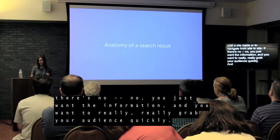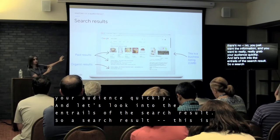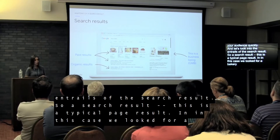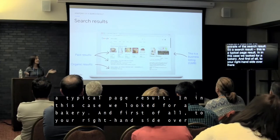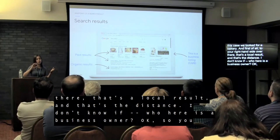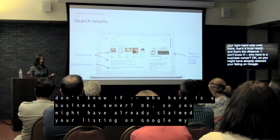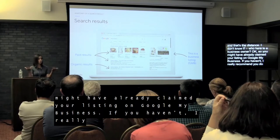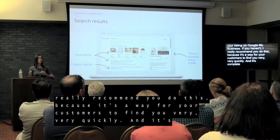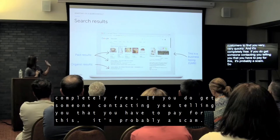Let's look into the anatomy of a search result. Here's a typical results page — in this case we searched for a bakery. To the right-hand side there's a local result for a business. If you're a business owner, you may have already claimed your listing on Google My Business. If you haven't, I really recommend you do — it's a great way for customers to find you very quickly, and it's completely free. If someone contacts you saying you have to pay for it, it's probably a scam. Then there are the paid results, marked with 'Sponsored' or 'Ad.'